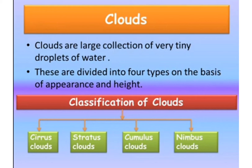Clouds are divided into four types on the basis of appearance and height — depending on the appearance of the cloud as well as the height. The four types are cirrus clouds, stratus clouds, cumulus clouds and nimbus clouds. Let us learn the spelling: C-I-R-R-U-S, cirrus clouds. S-T-R-A-T-U-S, stratus clouds. C-U-M-U-L-U-S, cumulus clouds. N-I-M-B-U-S, nimbus clouds.